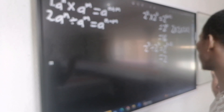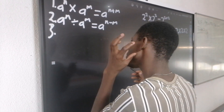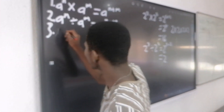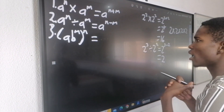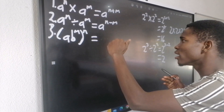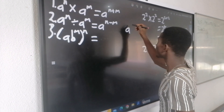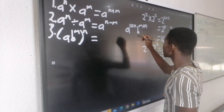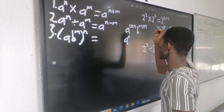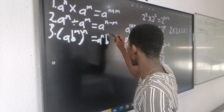Exponential law number 3 says that any number outside the brackets multiplies anything inside the brackets. Remember, brackets mean multiplication, so exponent multiplies exponent. If I have (A·B^m)^n, the exponent outside is going to affect everything inside. This A also has its own exponent of 1, so it will be A to the power of 1 multiplied by n. Also, B to the power of m multiplied by n. This means it will be A to the power of n, B to the power of mn.